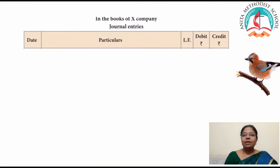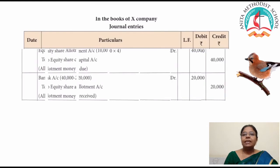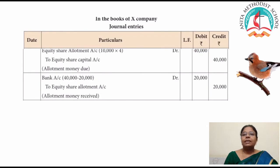Now for allotment money due: allotment money 10,000 at the rate of 4 = 40,000 — to equity share capital. Then for receiving the allotment money: 40,000 minus 20,000 = 20,000. Bank account to equity share allotment: 20,000. Allotment money received.